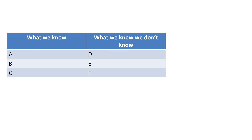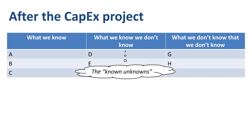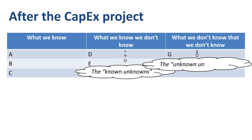After implementing the CAPEX project, you should have a lot more information than before it. You can update the first two categories and provide input into the third, which is called 'What we don't know that we don't know,' also known as the unknown unknowns.